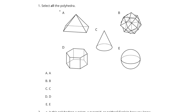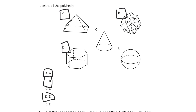Well, A is a polyhedra, D is a polyhedra, and this crazy looking shape B is a polyhedra as well. So we have A, B, and D. E is not because it's a sphere and has a circle — no line segments there. And then C is not; even though it's a cone, you have that circle base, and so it's not technically a polyhedra.